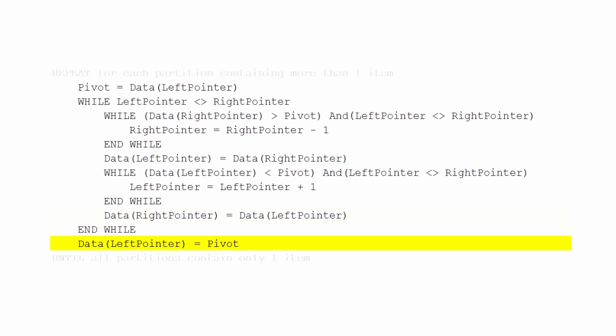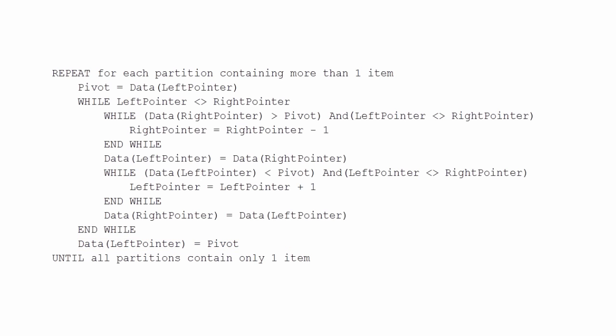When the outer loop ends, we take the pivot and put it in the position given by the left or the right pointer. Arguably a nicer way to partition the list. To turn it into a quicksort, we repeat this for each list containing more than one item.